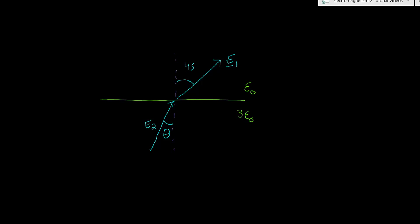So what we want to do is figure out what that angle is. First, we're going to break up the components of E1 and E2 into the X and Y directions. So we'll have E1 tangential and E1 normal, and similarly for E2 we're going to have E2 normal and E2 tangential.